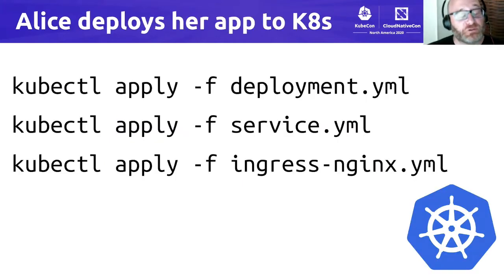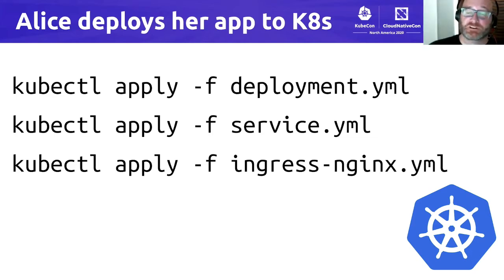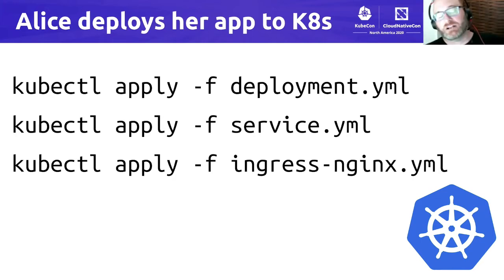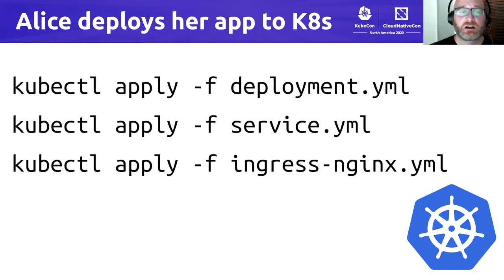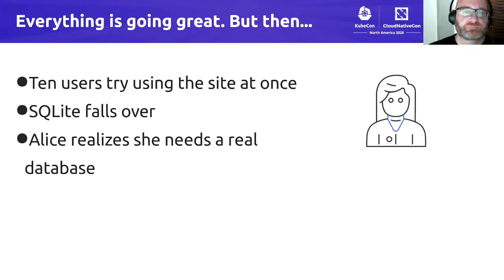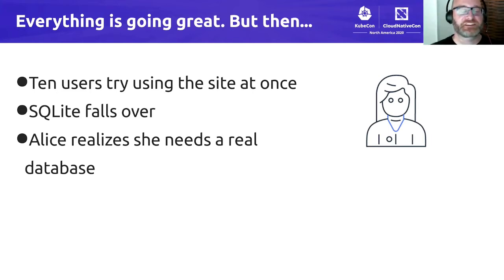So Alice goes to deploy her application to a target Kubernetes cluster. To do so, she does the typical kubectl apply for her deployment, a service, and possibly an ingress resource for top-level inbound routing. Everything is fine. But then, quite predictably, SQLite falls over. It's not really designed for heavily concurrent access.